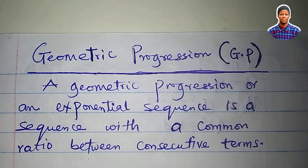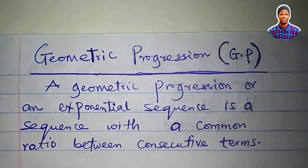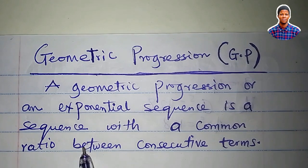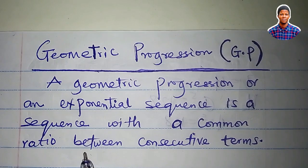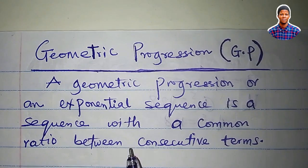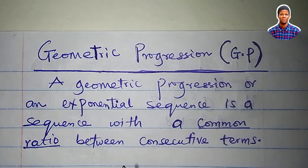A geometric progression, or an exponential sequence, is a sequence with a common ratio between consecutive terms. Remember that a sequence is an orderly arrangement of terms with a common relationship between consecutive terms. For a geometric progression, that common relationship is the common ratio. Remember, for an AP it's the common difference; here, we are talking about common ratio.